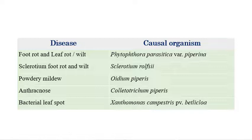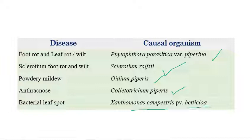These are the list of important diseases in Betelwine. First one is foot rot or leaf rot wilt, which is caused by Phytophthora parasitica var. Piperina. Sclerotium foot rot and wilt, which is caused by Sclerotium rolfsii. Powdery mildew, which is caused by Oidium piperis. Anthracnose, which is caused by Colletotrichum piperis. Bacterial leaf spot, which is caused by Xanthomonas campestris pv. betelicola. These are the list of important diseases.